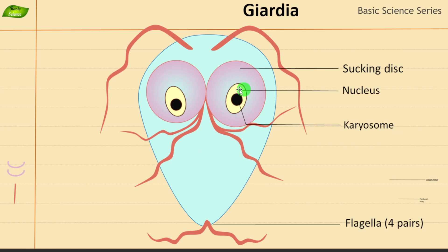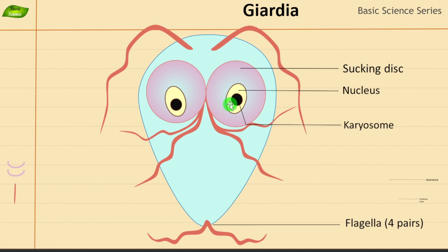Giardia is a eukaryotic organism, meaning it has a true nucleus enclosed by a nuclear membrane. Importantly, Giardia has two similarly-sized nuclei within a single cell. The presence of two nuclei is related to its adaptability and rapid reproduction — as a parasite it needs to reproduce very fast to survive inside the host and cause damage to host tissue. Having a nucleus means genetic material is stored inside, helping Giardia adapt to various environmental conditions.